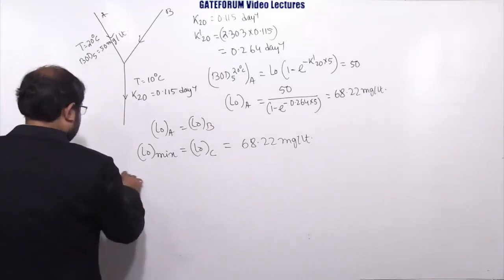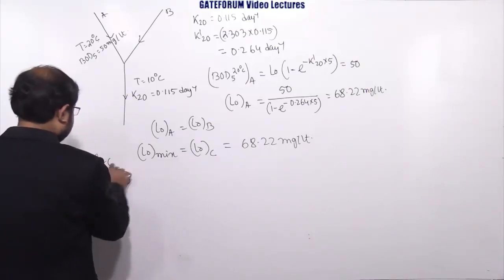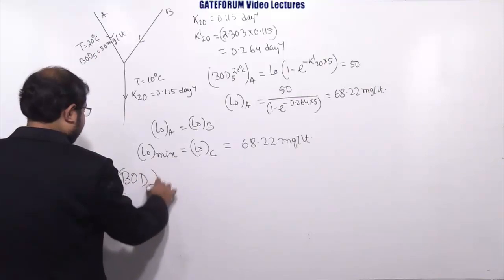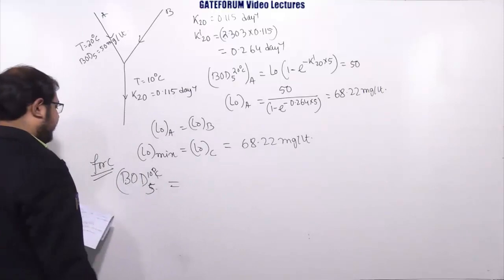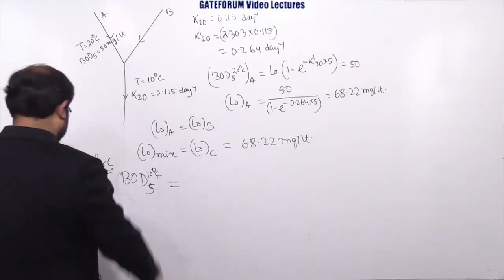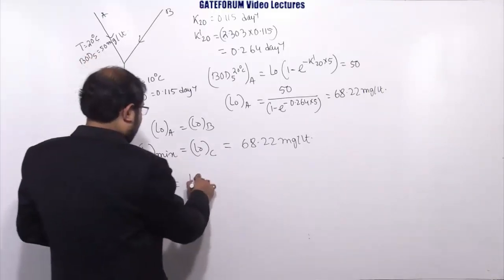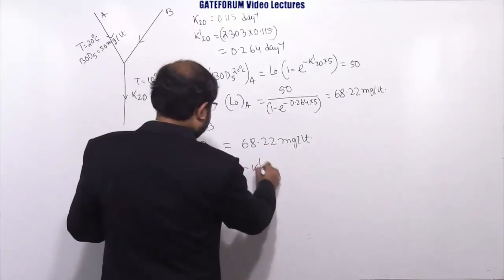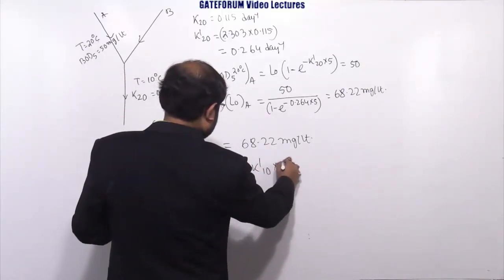Now for C, BOD5 for 10°C they are asking that equals what? L0 into (1 - e^(-K'10 × 5)).